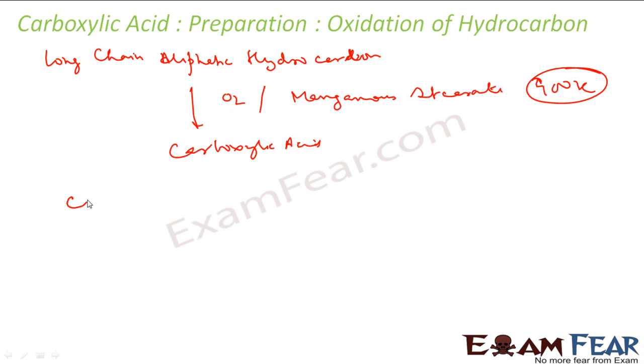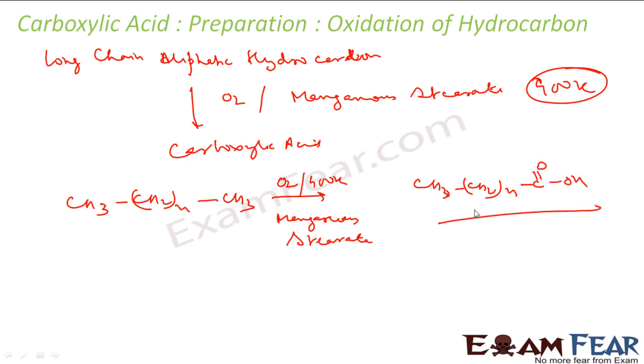So an example if you want I can give you. For example CH3 CH2, it can be in a very big long chain, oxygen 400 Kelvin, I have my catalyst manganese stearate. And what I get is n and I get COOH, this is how you get this. So the terminal alkyl here becomes carboxylic acid, this is what happens.